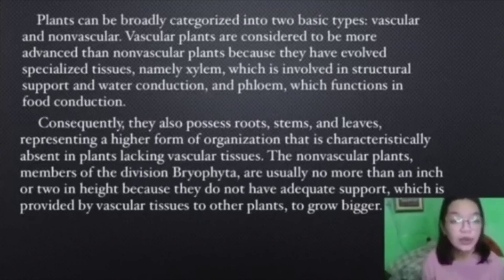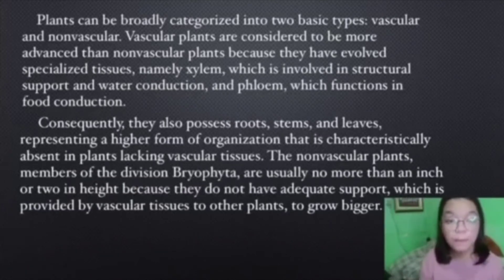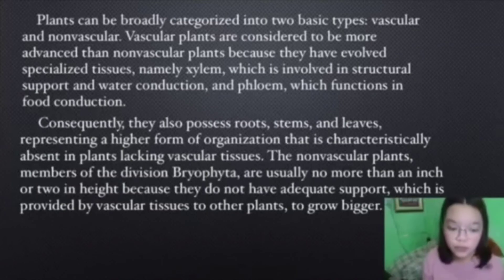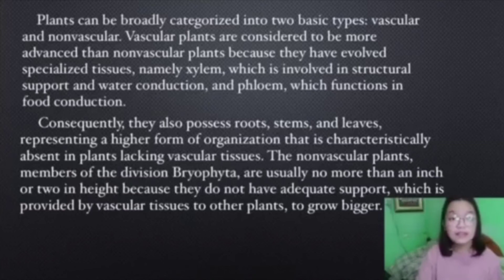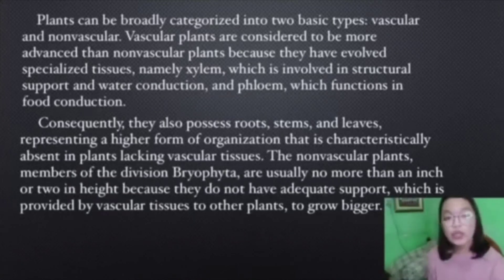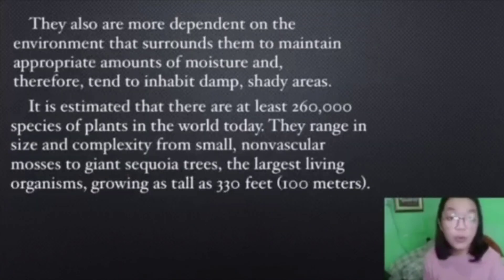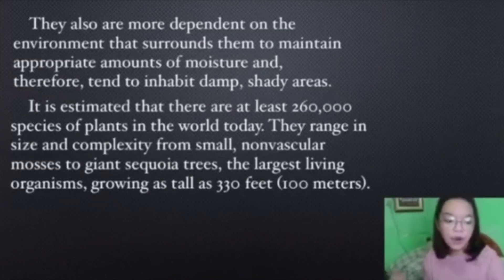Plants can be broadly categorized into two groups: vascular and non-vascular plants. Vascular plants are more advanced, as they have specialized tissues called xylem and phloem. Xylem is responsible for the conduction of water, while phloem is responsible for the conduction of food. Consequently, they also possess roots, stems, and leaves, representing a higher form of organization that is absent in plants lacking vascular tissues. Non-vascular plants are usually no more than an inch or two in height because they do not have adequate support, and tend to inhabit damp or shady areas.